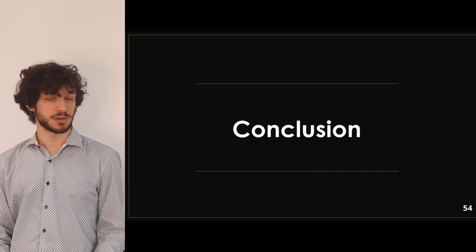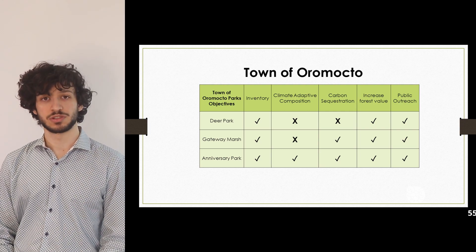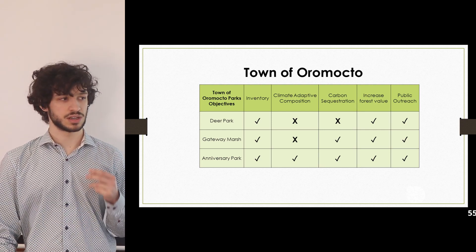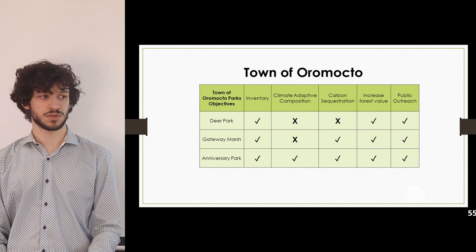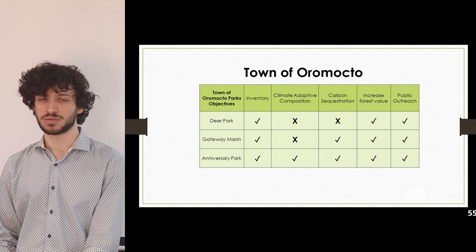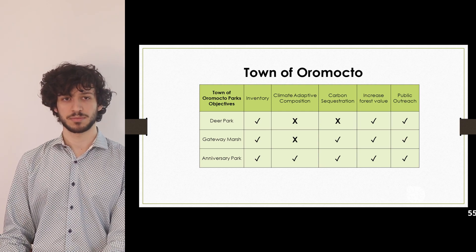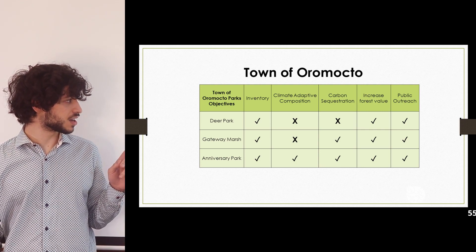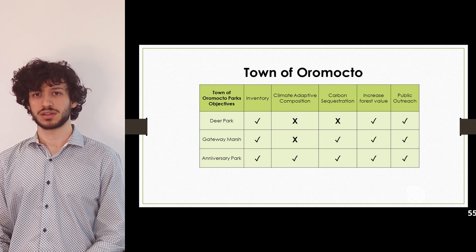In conclusion, for the town of Oromocto: an inventory was completed for all three parks. Anniversary Park met the climate-adaptive species composition target; the other two did not. Anniversary Park and Gateway Marsh met the carbon sequestration targets; Deer Park did not. An increase in forest value was found in all three parks. Public outreach was conducted through public surveys and signage. Moving forward, a maintenance schedule and an inventory every five years should be conducted to keep the forest-level data current.